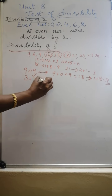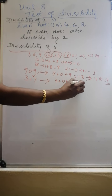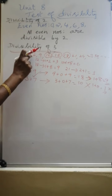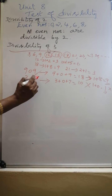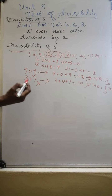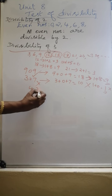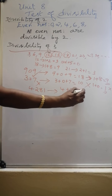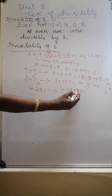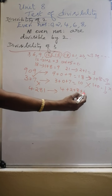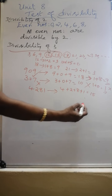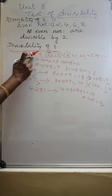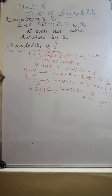Now consider 307. Add 3 plus 0 plus 7, which is 10. Add the 2 digits again: 1 plus 0 gives 1. This 1 is not a multiple of 3, so this number is not divisible by 3. In the same way, for 4281: 4 plus 2 plus 8 plus 1. 4 plus 2 is 6, plus 8 is 14, plus 1 is 15. Again add: 1 plus 5 is 6. 6 is a multiple of 3, therefore 4281 is divisible by 3.